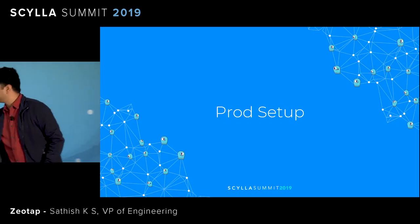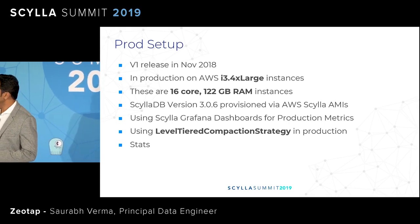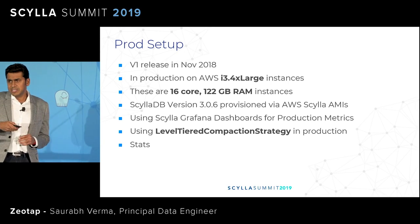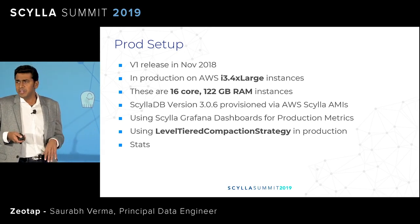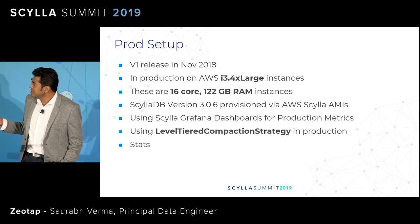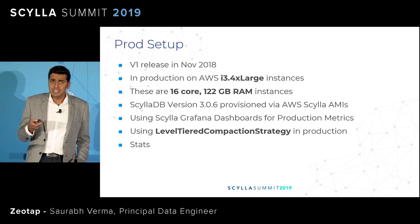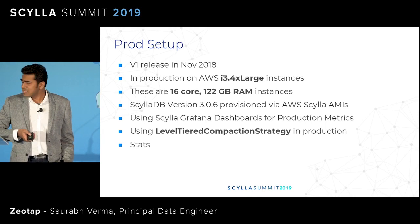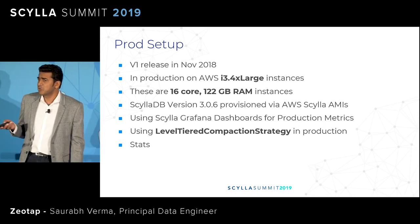Coming to the production setup, we released V1 of this Connect system in November 2018. We are an AWS shop, so it was running on i3.4x and started with two nodes. Now we are close to three and four nodes depending on the regions. The point on the leveled tiered compaction strategy — this is what we are using in production. Currently we are running close to 150 to 200 match tests and exports per day.